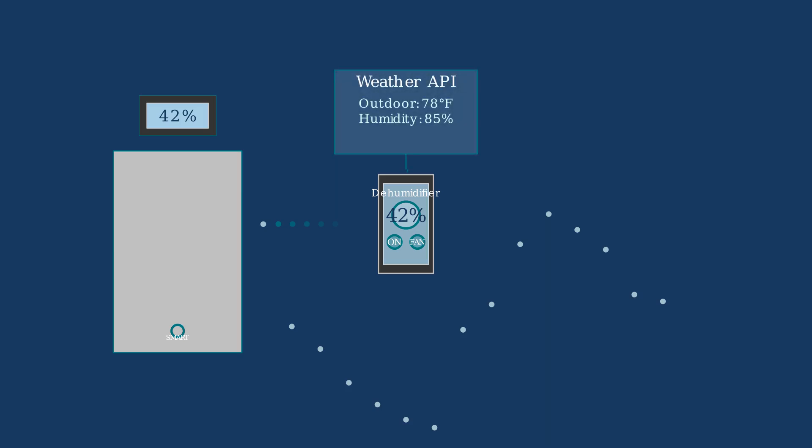Smart dehumidifiers can automatically adjust their settings based on real-time weather conditions by connecting to weather APIs. These devices integrate seamlessly with home automation systems, becoming part of your connected home ecosystem.